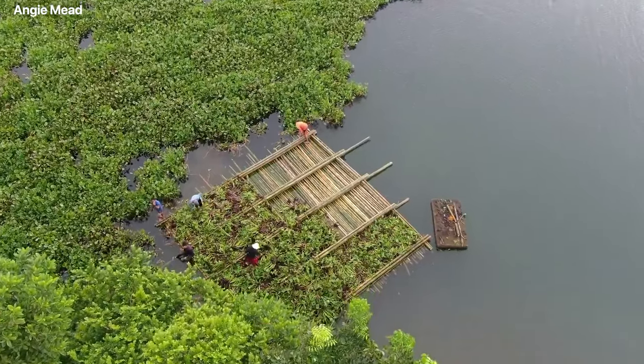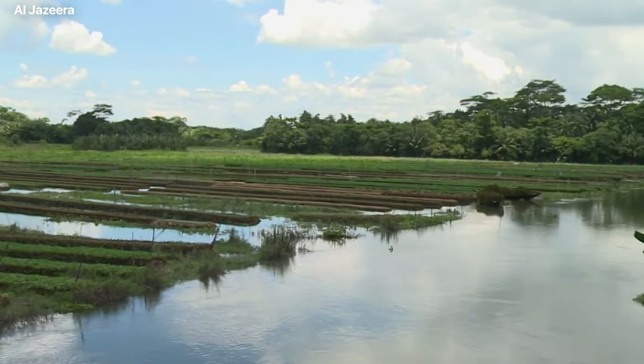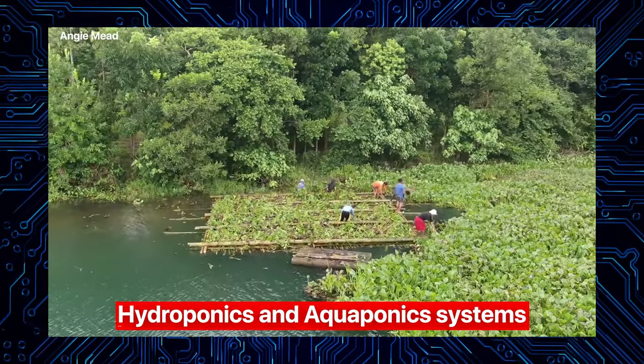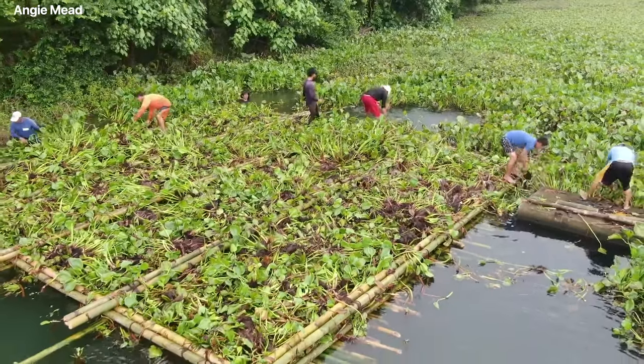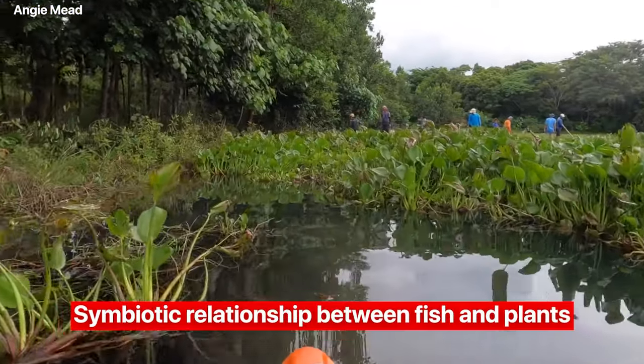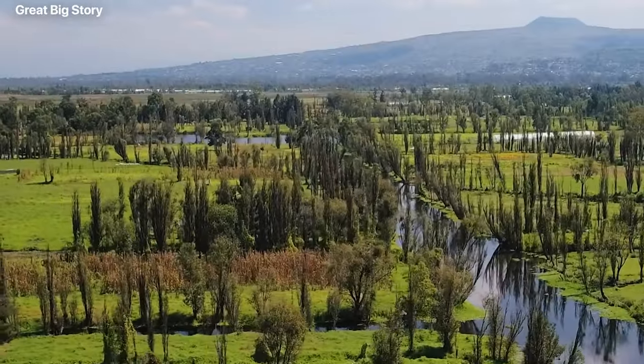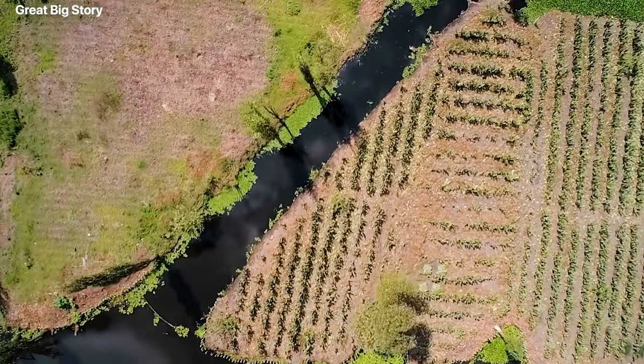They typically involve the cultivation of crops and animal husbandry, including fish, shellfish, and other aquatic species. In addition, they often include hydroponics and aquaponics systems, which involve growing plants in nutrient-rich water and creating a symbiotic relationship between fish and plants. Floating farms are also used for recreational purposes, such as fishing, swimming, and boating.